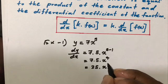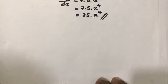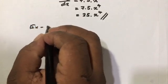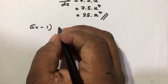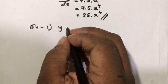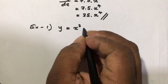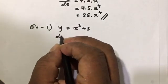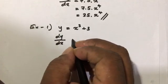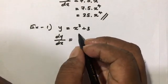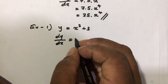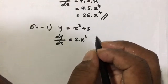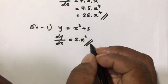Example number one: differentiate y equals s cubed plus 3. The derivative of y equals dy/dx. Using the power rule, we get 3 times s squared, and the constant 3 disappears. So the answer is 3s squared.